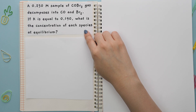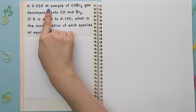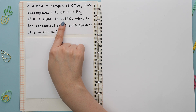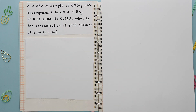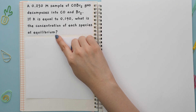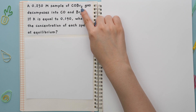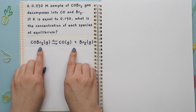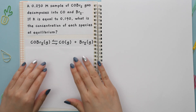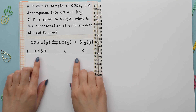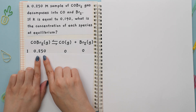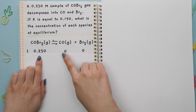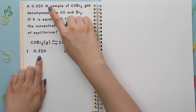You'll see this in the following equilibrium example. A 0.250 molar sample of COBr2 gas decomposes. If K is equal to 0.190, what is the concentration of each species at equilibrium? Because this question asks for concentration at equilibrium and we are only given the initial concentration of the reactant, this is how you know you need to build an ICE table. The first step is writing the balanced chemical equation. Next, write the initial concentrations for each chemical species — this represents the I in ICE. The initial concentration for the reactant was given in molarity. For ICE tables, the units must be in molarity; if not, you would need to convert first.